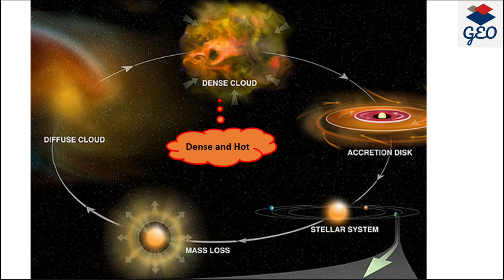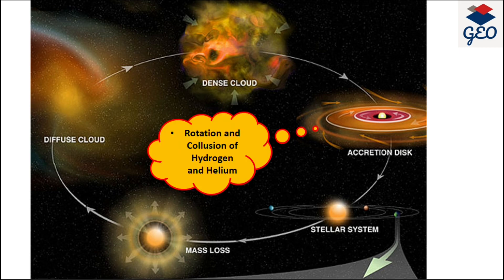According to the hypothesis, the core of the cloud grew under the influence of gravity and became denser and hotter. Due to its rotation, the helium and hydrogen particles started moving towards the center of the core and started colliding with each other. Due to the collision, pure energy was created.